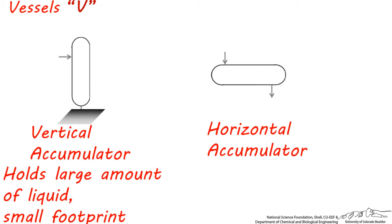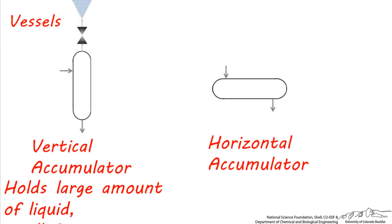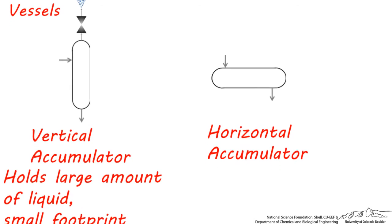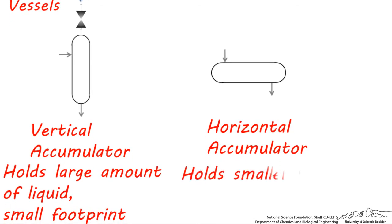It's also used for vapor-liquid mixtures when you may need to vent or flare vapors. Horizontal tanks are typically used for smaller volumes, such as for holding and draining a reflux stream for a distillation column.